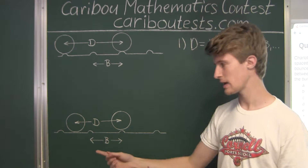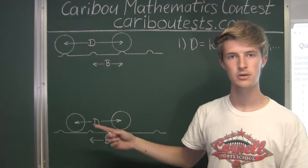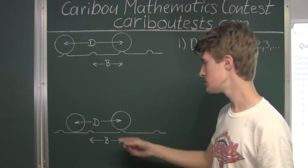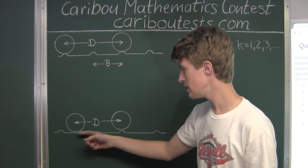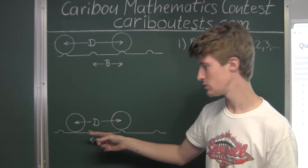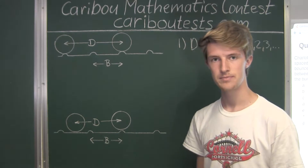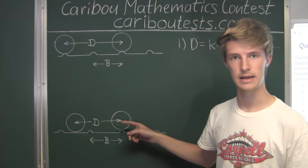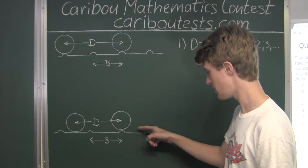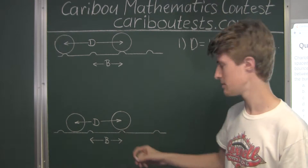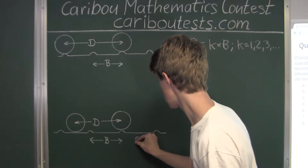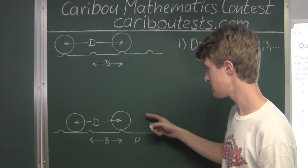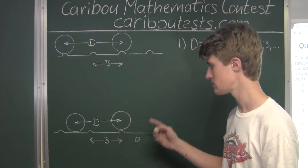Now let's investigate the second case, which is where both tires are not bouncing at the same time. Looking at this picture, the next tire to hit a bump would be the back tire, because the back tire is already in between two neighboring bumps and therefore is closer to the next bump. Now when the back tire reaches the next bump, the front tire gets to a point somewhere between the two neighboring bumps, and we will call this point P. After that, the next tire to hit a bump would be the front tire, because it is in between two neighboring bumps and is closer to the next bump.